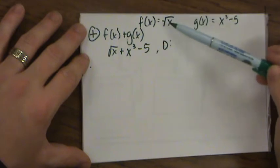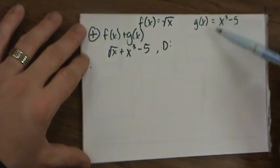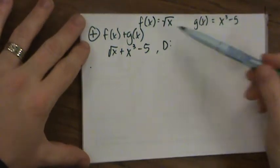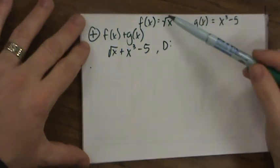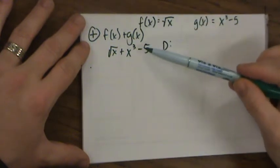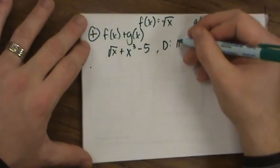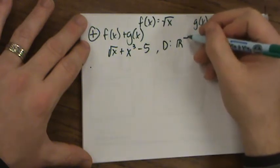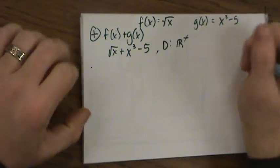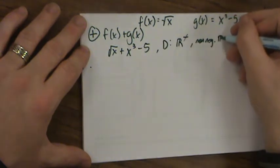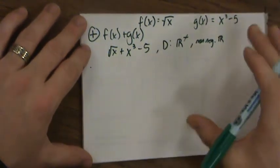The domain for this guy right here is all non-negative real numbers. Even though the domain for this one is any real number, the domain for this new function is going to be the intersection of those two domains. This one was all of them. This one was only the positives and 0, so the new domain is all the positives and 0. All of the reals that are not negative.